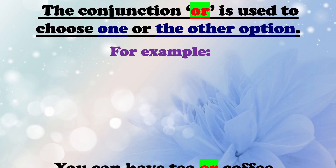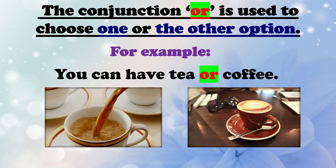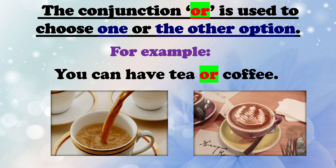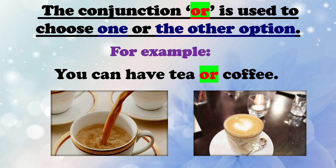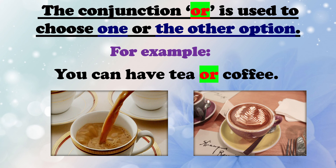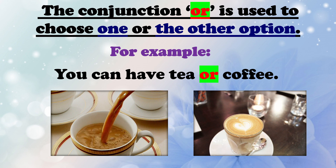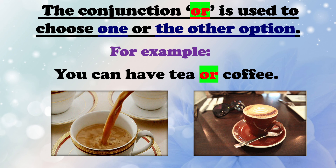For example: You can have tea or coffee. Here we are having two options — tea or coffee — and we have to choose either tea or coffee. So here we have used conjunction OR.